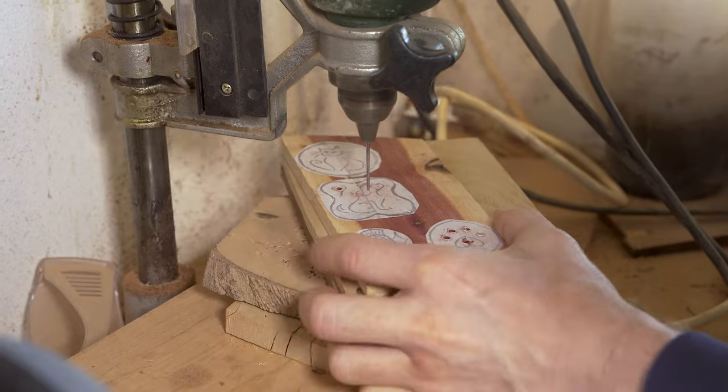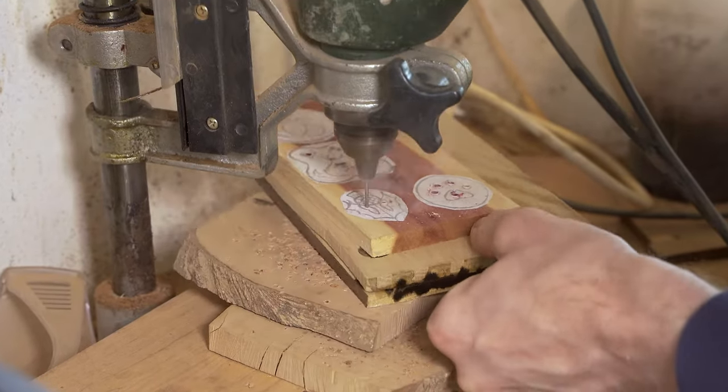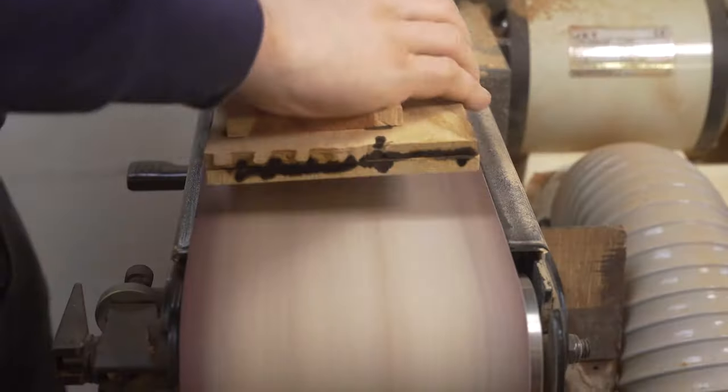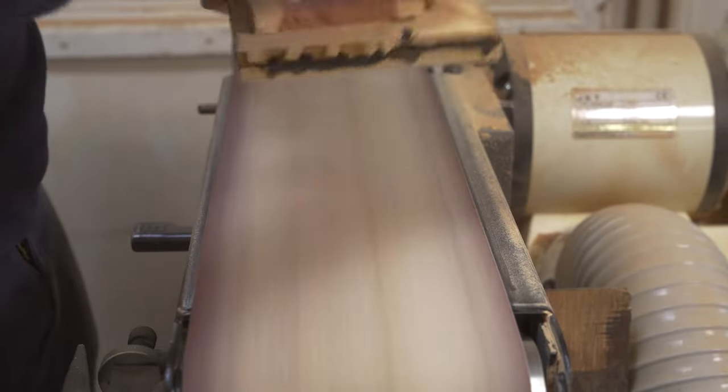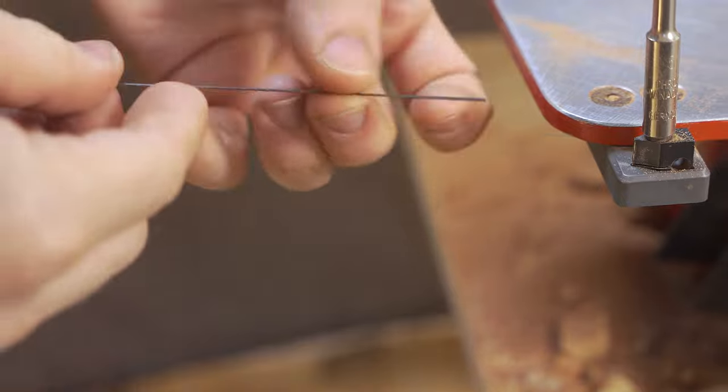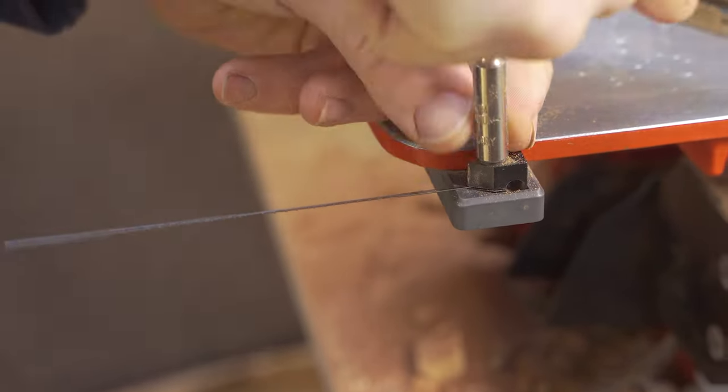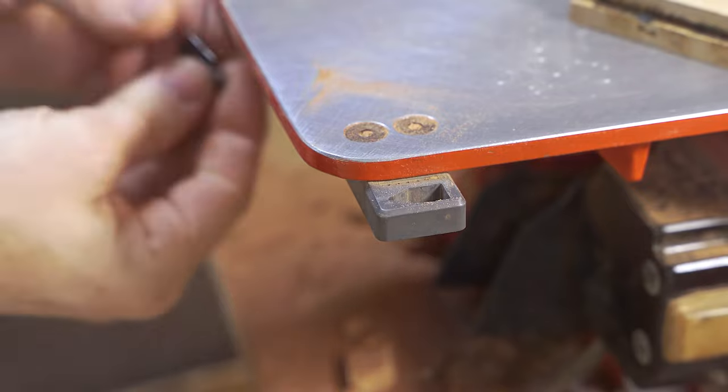Once we've done those holes, we sand the back of each project to make sure that it's nice and flat and easier for us to cut out on the scroll saw. We put a new blade in to ensure that the scroll saw is performing to its best potential.